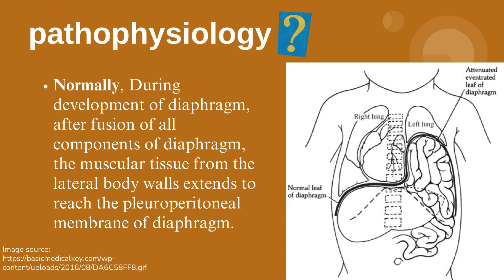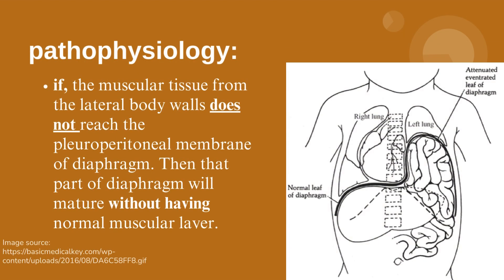Pathophysiology. Normally, during development of diaphragm, after fusion of all components of diaphragm, the muscular tissue from the lateral body walls extends to reach the pleuroperitoneal membrane of diaphragm. If the muscular tissue from the lateral body walls does not reach the pleuroperitoneal membranes, then that part of diaphragm will mature without having a normal muscular layer.